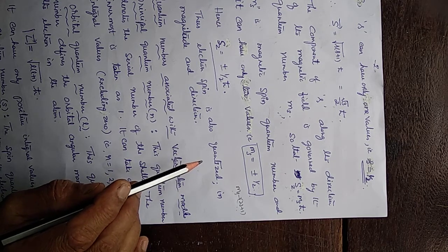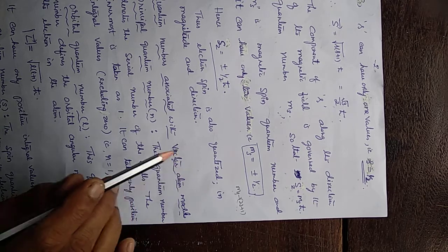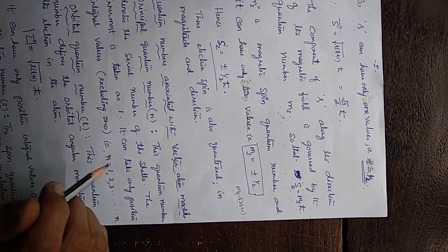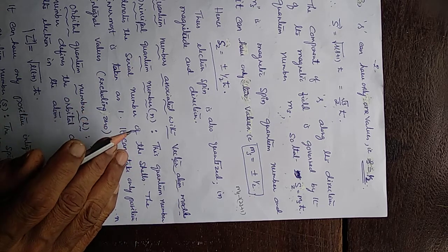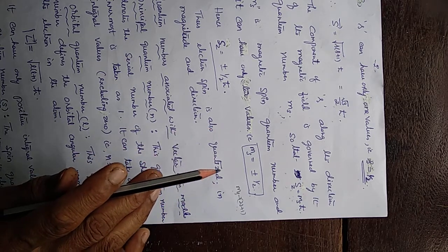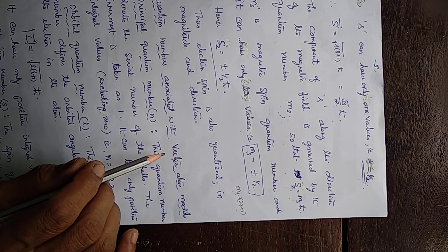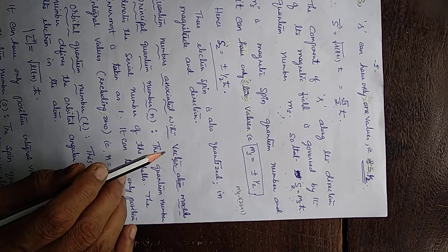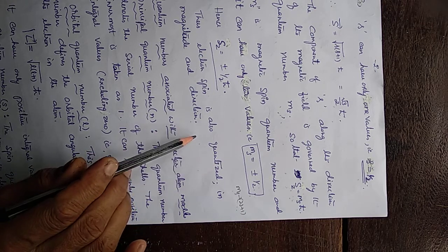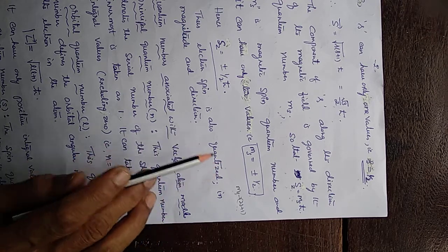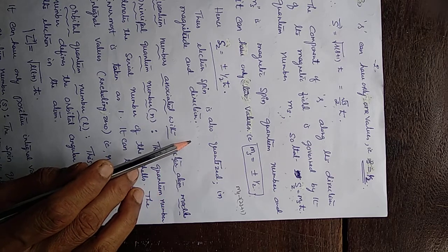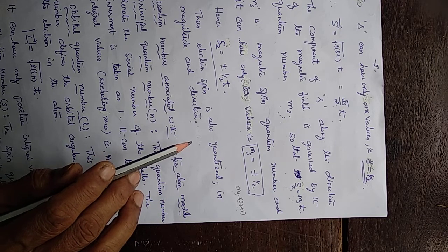Using these two features — space quantization and electron spin quantization — the vector atom model, along with features from Bohr and Sommerfeld, was successful in explaining the experimentally observed spectral facts of atoms containing only one electron. This model is applicable to spectra of one-electron atoms and was successful in explaining their spectral lines.